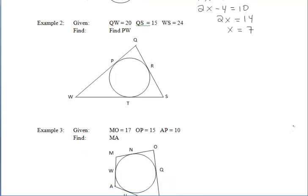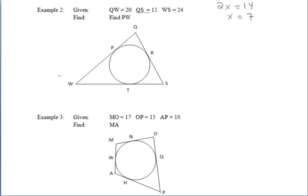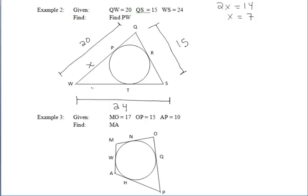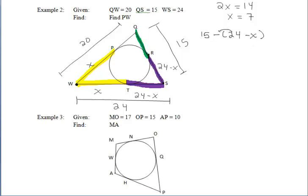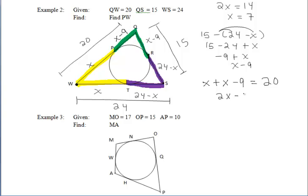Example 2 is fairly similar to example 1 in that we're going to do a walk-around problem, but instead of dealing with radii in circles, we're dealing with the two tangent theorem — tangents drawn from the same external points. Starting with W, since we want to find segment PW, I put an X there. Those two yellow segments must be congruent. Walking counterclockwise, the purple segment is 24 minus X, and the other purple segment is also 24 minus X. For the green segment, we do 15 minus the quantity of 24 minus X, giving us X minus 9. Since yellow plus green equals whole: X plus X minus 9 equals 20, giving us X equals 14.5.